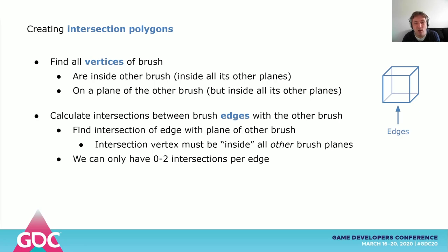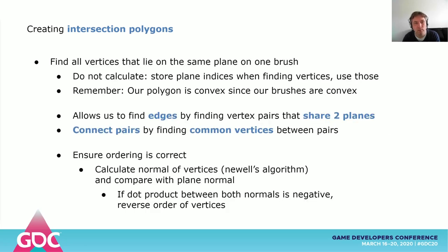Vertices of one brush that lie exactly on the other brush will be copied over to the other brush. At this point, we just have a bunch of vertices. Some vertices we already know are only on one of the two brushes, like the vertices that are inside the other brush. By keeping track of which planes intersect with which vertex, we can find all the vertices per plane, and by extension their side polygon — because, as I mentioned before, each side polygon has exactly one plane going through it.